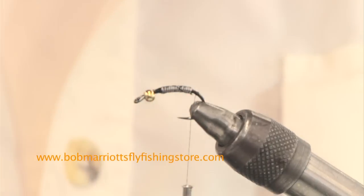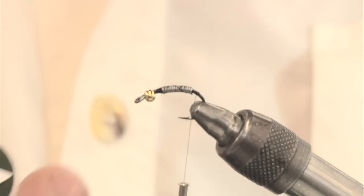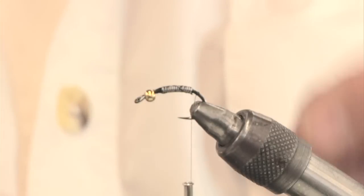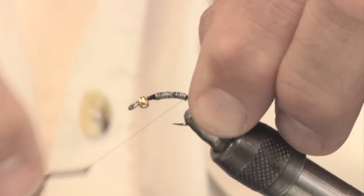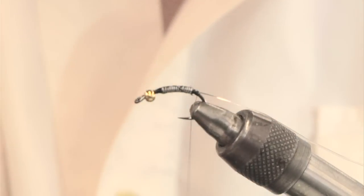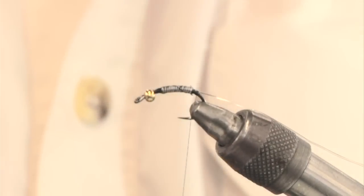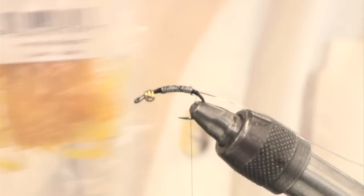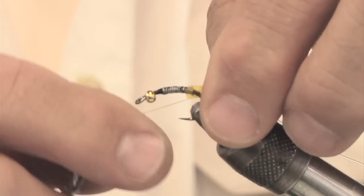Now I'm tying in a rib material which is this vinyl rib. And again I'm putting in a dab of super glue so it's not going to go anywhere. My next step is the back material which is a stretch flex back material. I'm going to tie that in.